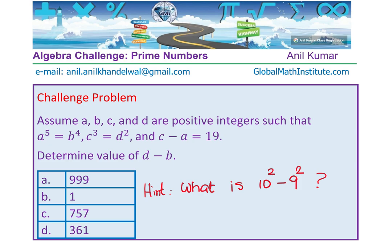Let's try to see if this helps. Well, 10 squared is 100 and 9 squared is 81. Their difference is 19. So 10 squared minus 9 squared is 19 and we can equate that to, yes, you are right. We can equate that to C minus A equals 19, right?